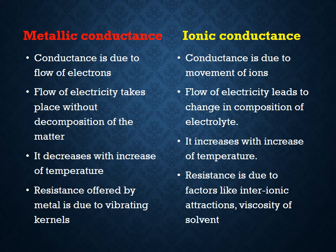Flow of electricity takes place without decomposition of the matter in the case of metallic conductance, but in the case of ionic conductance, flow of electricity leads to a change in the composition of the electrolyte. Metallic conductance decreases with increase of temperature, while ionic conductance increases with increase of temperature. In metallic conductance, resistance offered by metals is due to vibrating ions, but in ionic conductance, resistance is due to factors like inter-ionic attractions and viscosity of solvent.